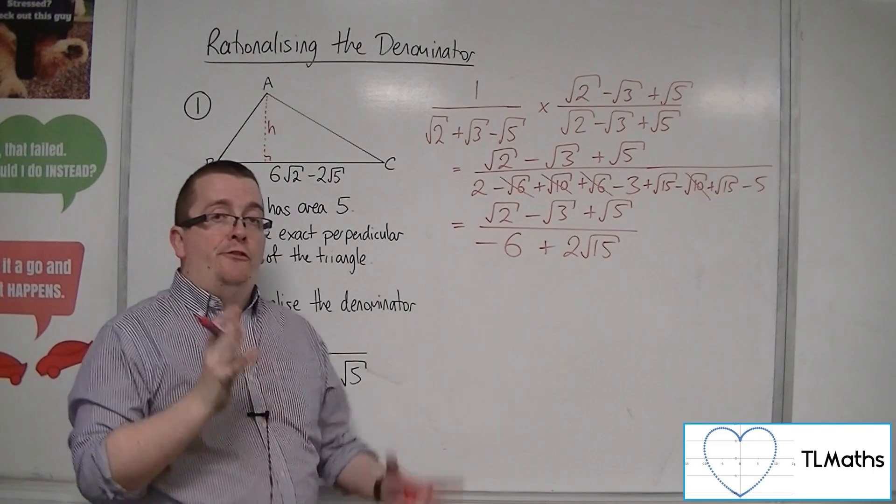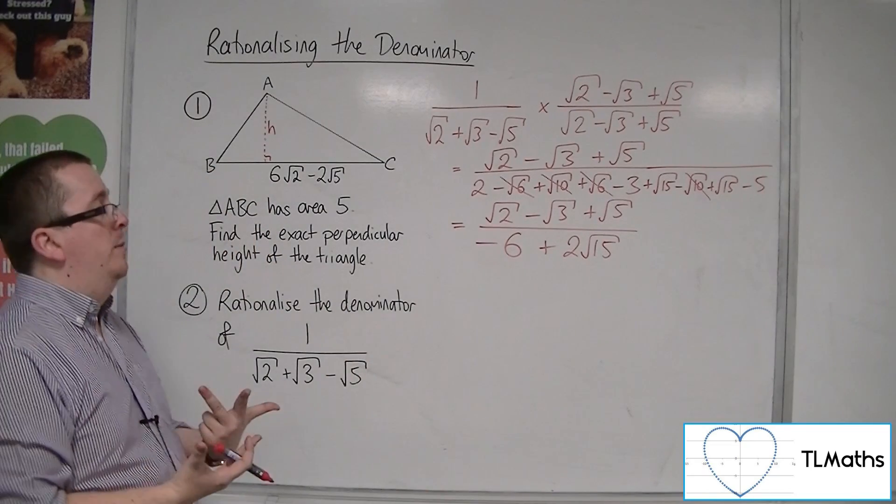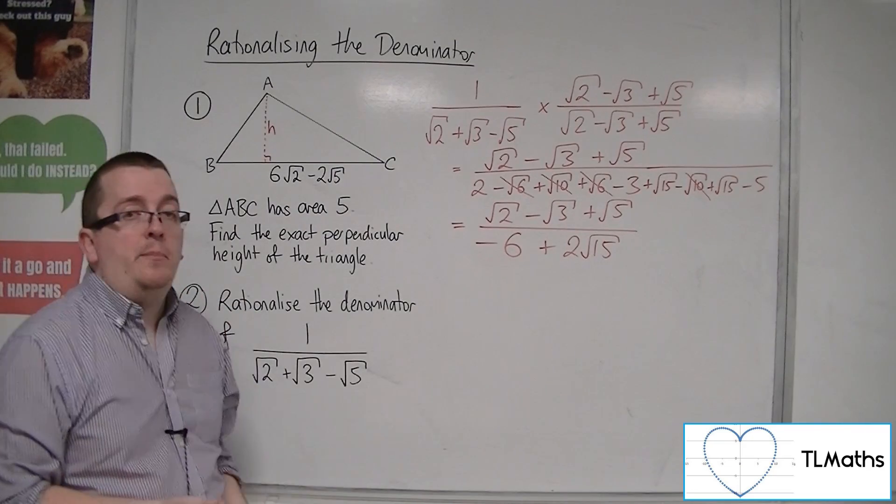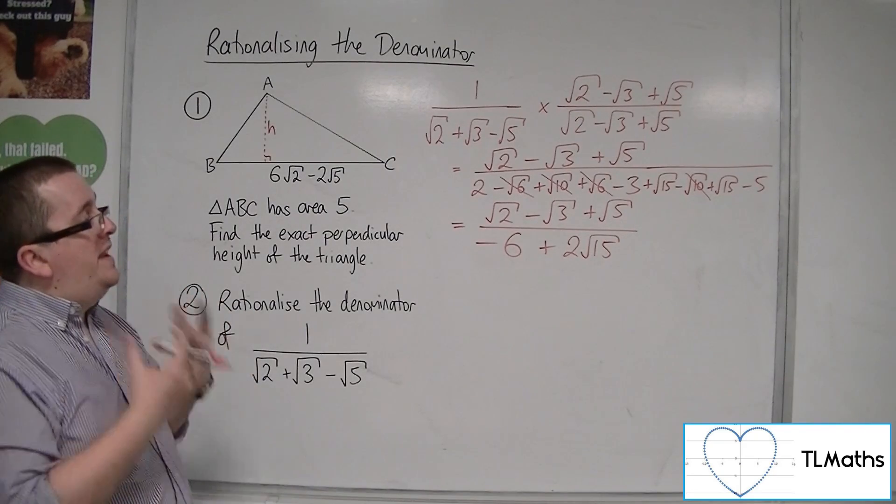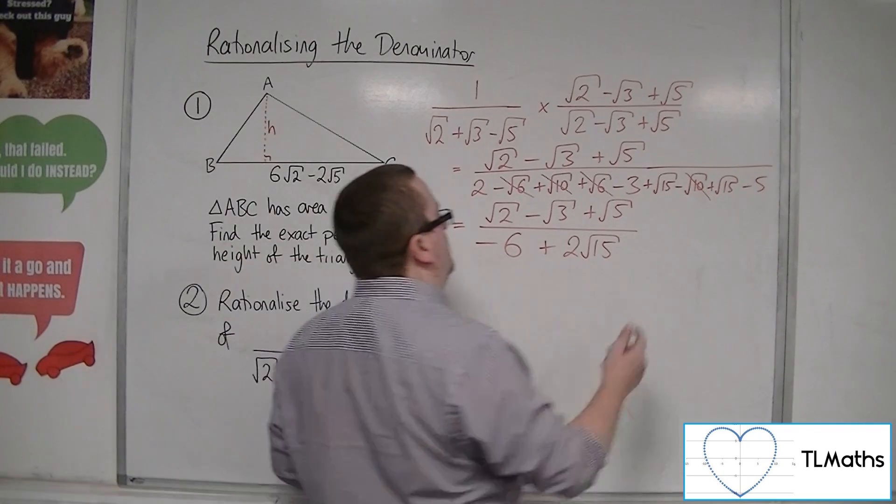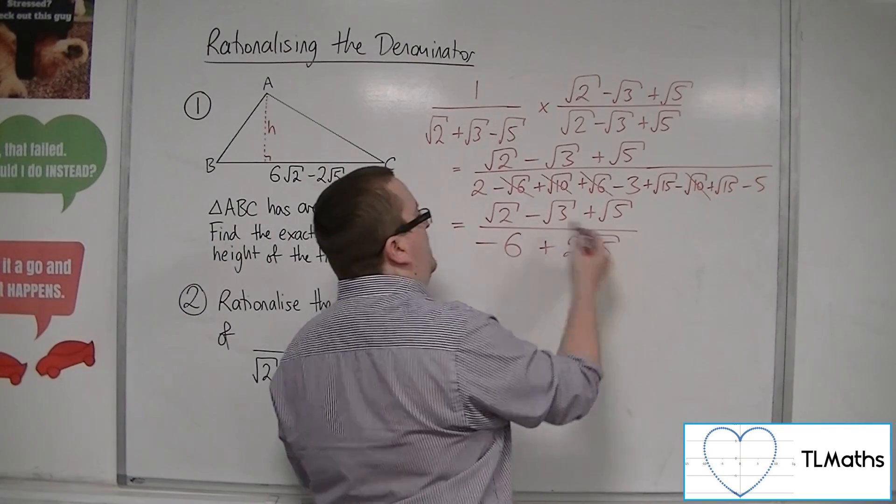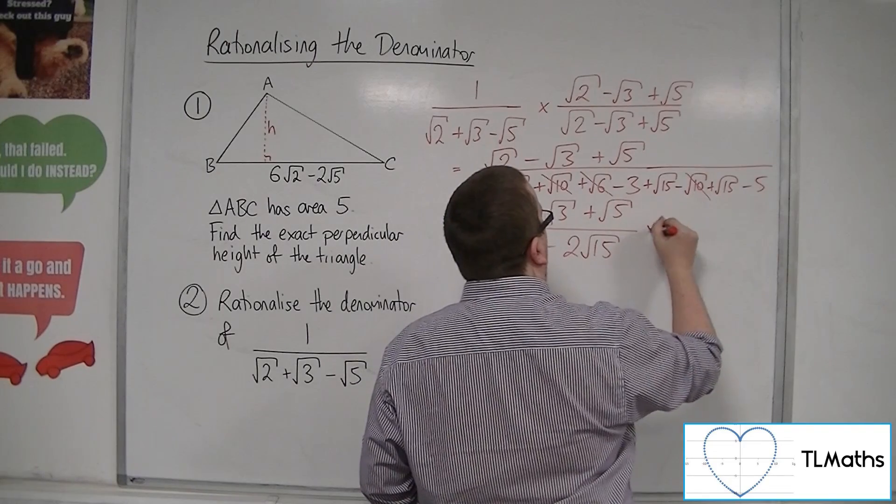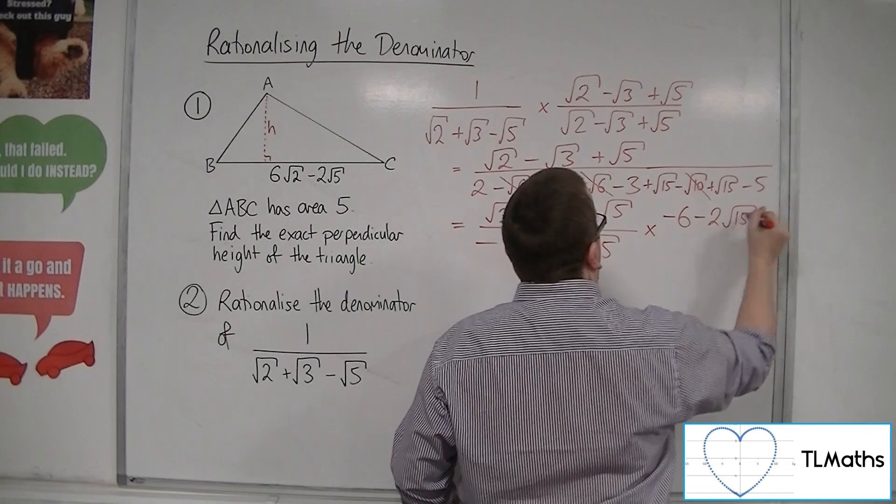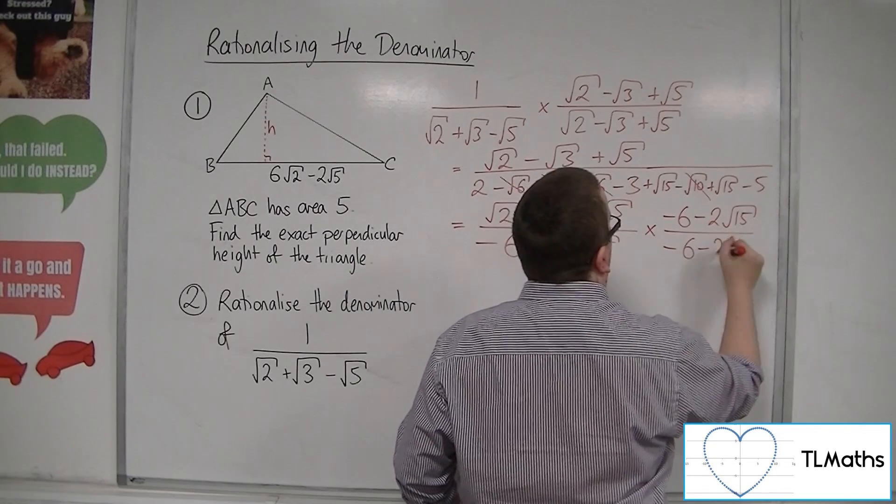So, we need to multiply that by minus 6 minus 2 root 15 over minus 6 minus 2 root 15.